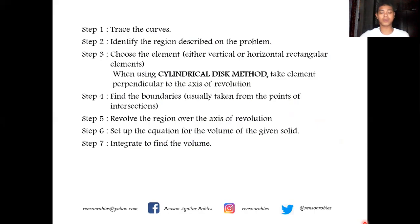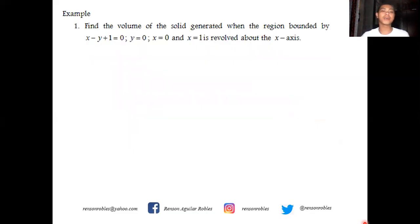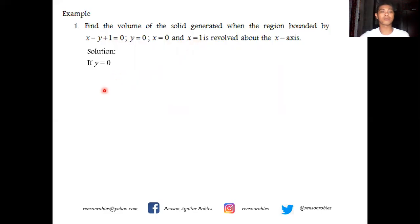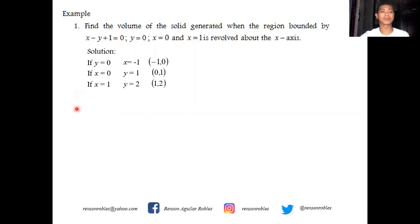We find the volume of the solid generated when the region bounded by x minus y plus one equals zero, y equals zero, x equals zero, and x equals one is revolved about the x-axis. First, we find the points of intersection. When y equals zero, x equals negative one, giving the point (−1, 0). When x equals zero, y equals one, giving (0, 1). When x equals one, y equals two, giving (1, 2).